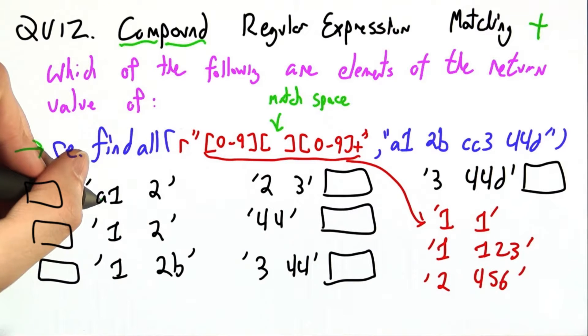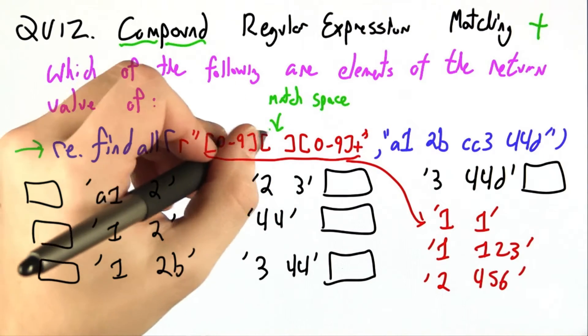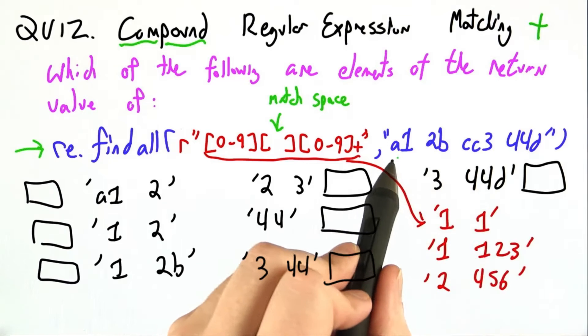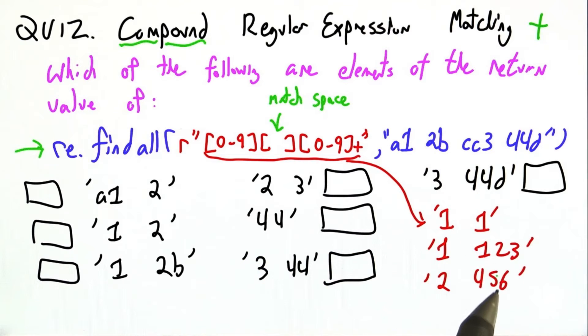So is A1 space 2 part of the possible return value? Well, it would have to match this regular expression and be in the string. It's in the string, but it doesn't match this regular expression because it starts with an A, and none of our things start with an A.